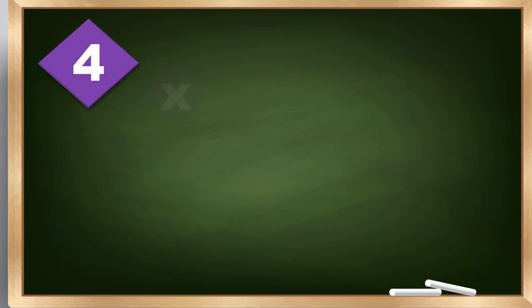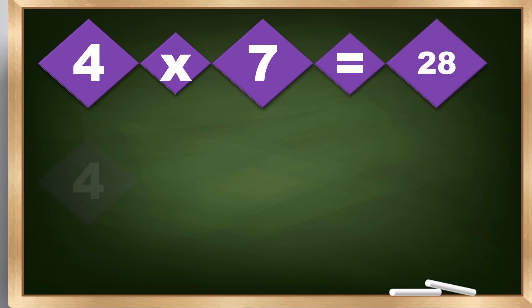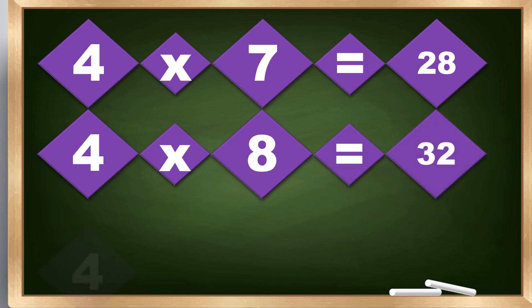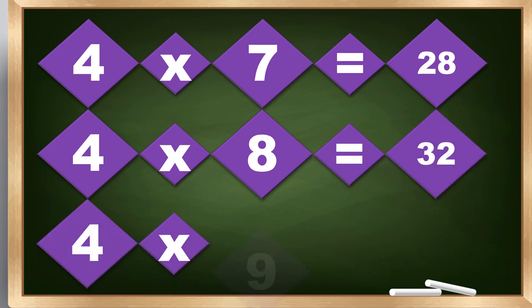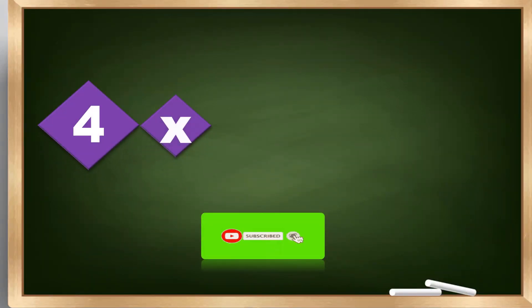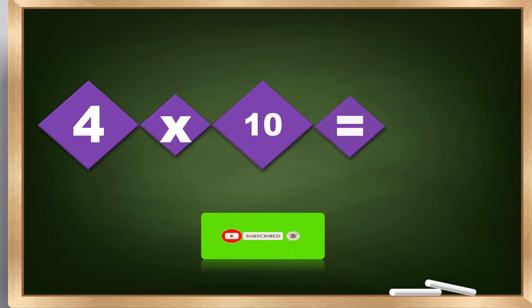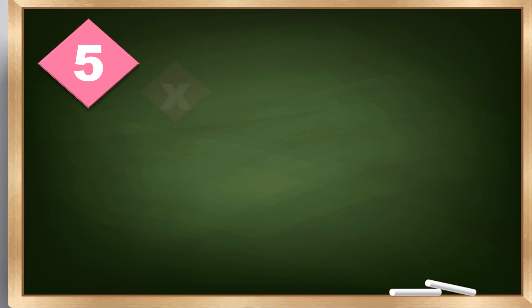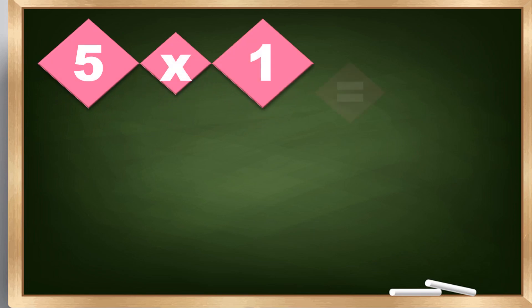4 times 7 equals 28. 4 times 8 equals 32. 4 times 9 equals 36. 4 times 10 equals 40. Multiplying by 5. 5 times 1 equals 5.